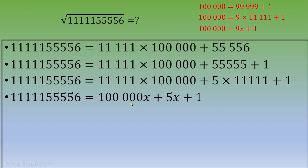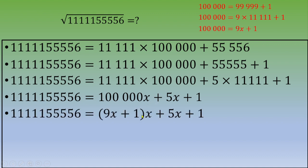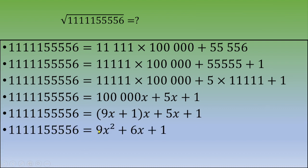If we plug this value in, we get nine x plus one, times x, plus five x plus one. Distributing and doing the math, this gives nine x squared plus six x plus one. This is a perfect square.